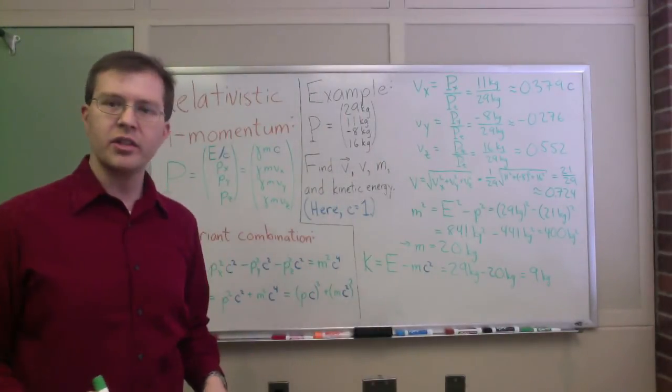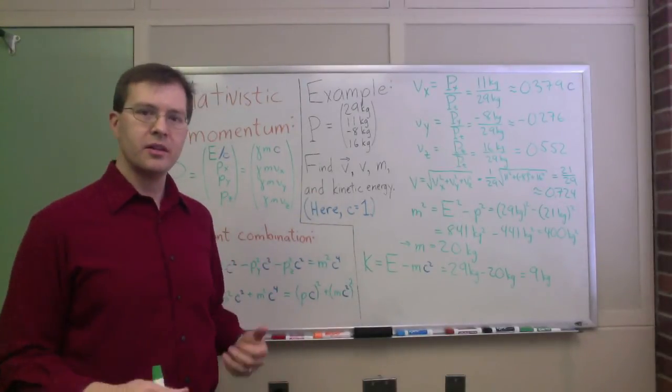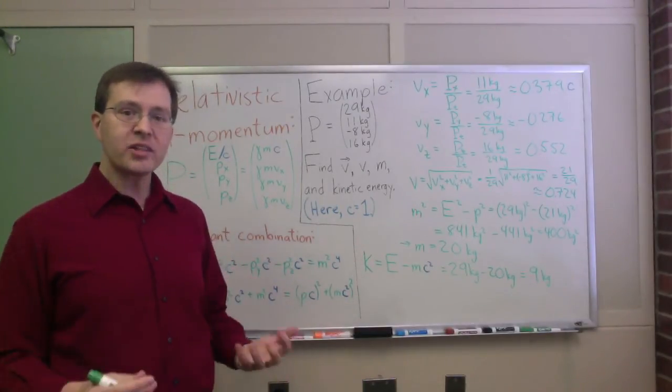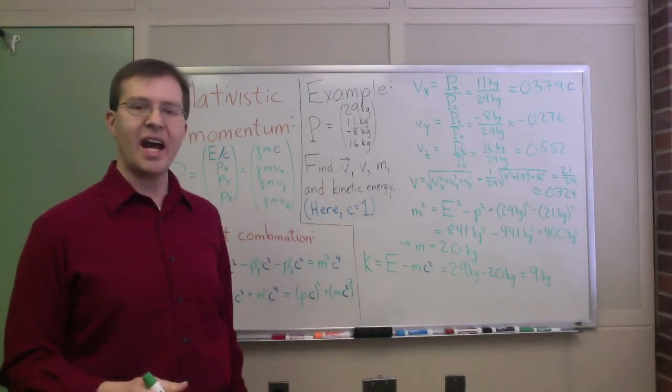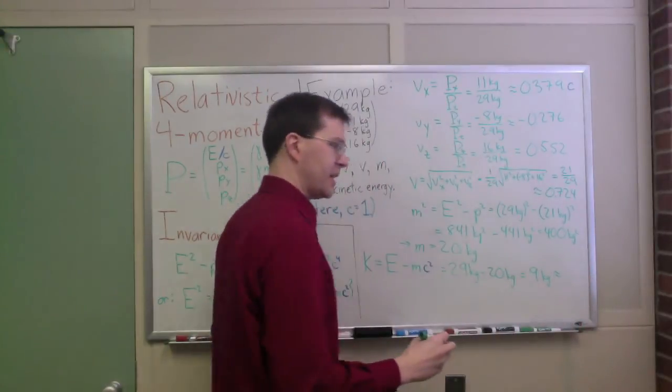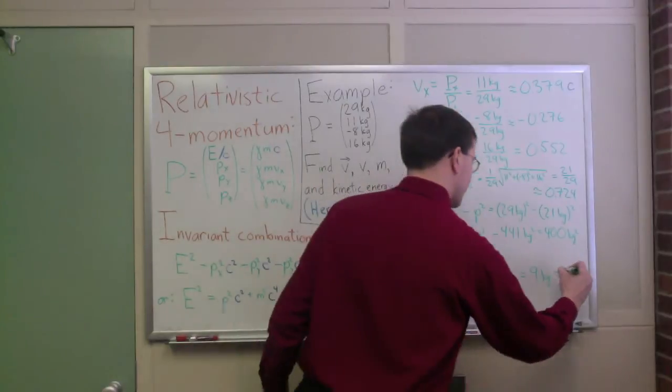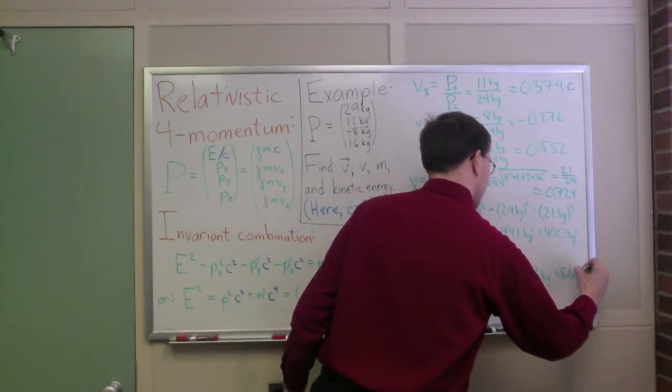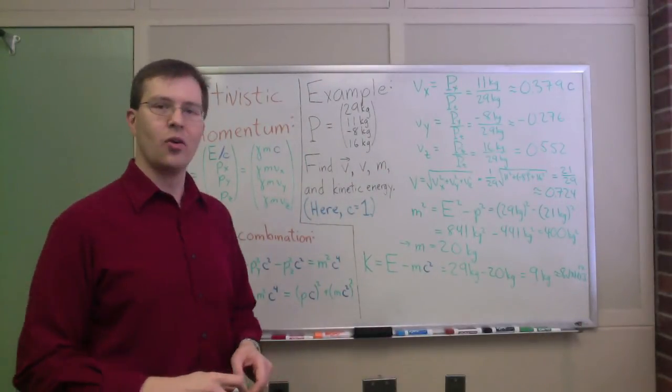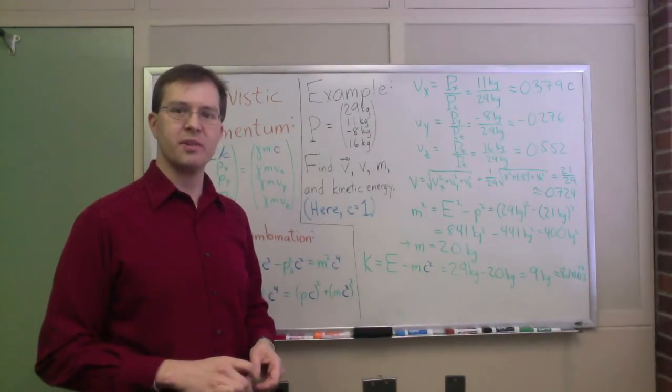So this object moving nearly three-quarters of the speed of light, that is 20 kilograms to start with, this 20 kilogram object moving close to three-quarters of the speed of light ends up having an extra energy, energy of motion, of 9 kilograms, which is roughly, let's see, if I put that into joules, if I convert that to joules by multiplying by c squared, that is 8.1 times 10 to the 17th joules. That's a lot of joules. It turns out that it costs a whole lot of energy to get even a small object moving that fast, moving close to the speed of light.